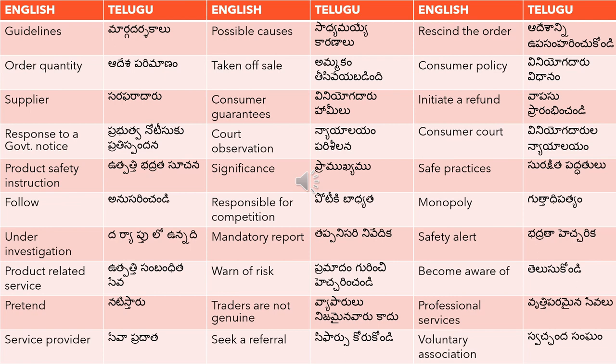'Professional services' means 'vritti paramaina sevallu'. 'Service providers' means 'seva pradatha' — 'pradatha' means provider. 'Seeker referral' means 'sifarasu korukondi'. 'Voluntary association' means 'swachanda sangham'.